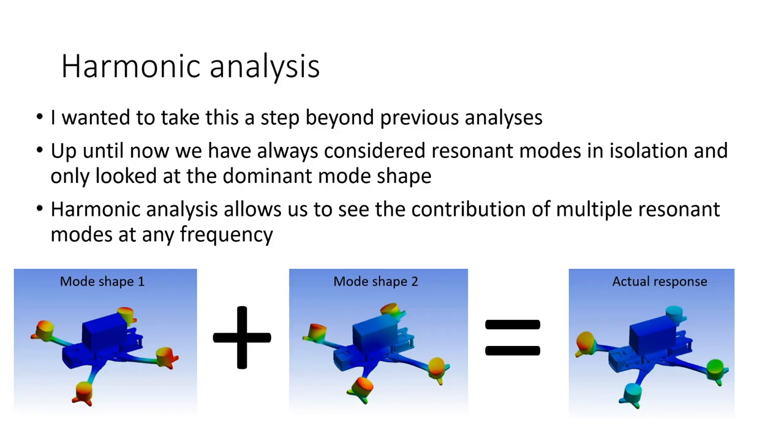I wanted to really take this analysis of the FPV Cycle Glide a step beyond the previous work that I've done. Up until now, we have always considered resonant modes in isolation, and we've only looked at the dominant mode shape for each resonant frequency. But of course, at every frequency, there are contributions from all of the mode shapes. And what harmonic analysis allows us to do is to see the contribution of multiple resonant modes at any frequency.